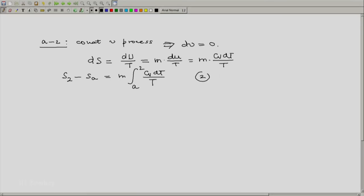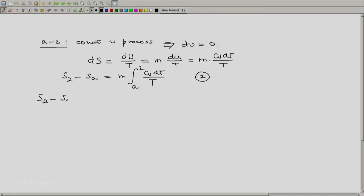Now if we combine our first expression which gave us SA minus S1 and the second expression, we will get S2 minus S1 equal to S2 minus SA plus SA minus S1. We have SA minus S1 from the previous page which turns out to be M integral 1 to A Cp dT by T plus M into integral A to 2 of Cv dT by T.